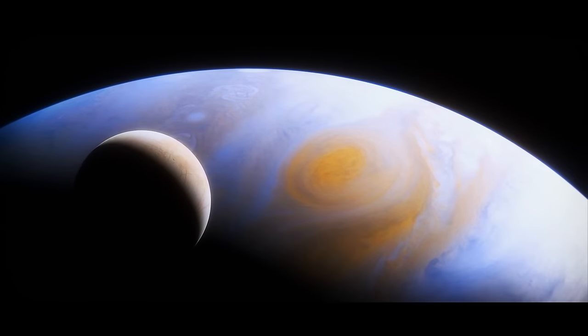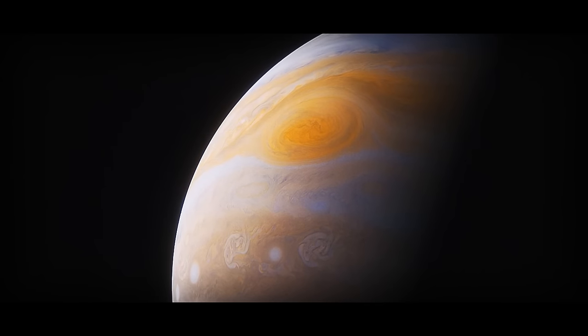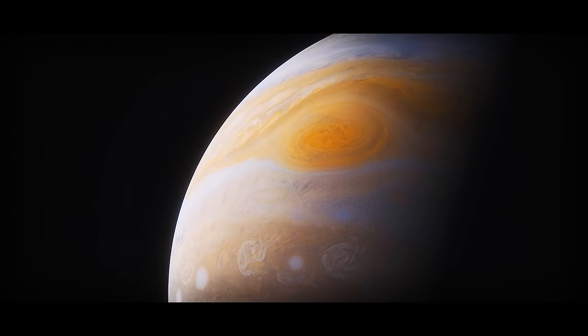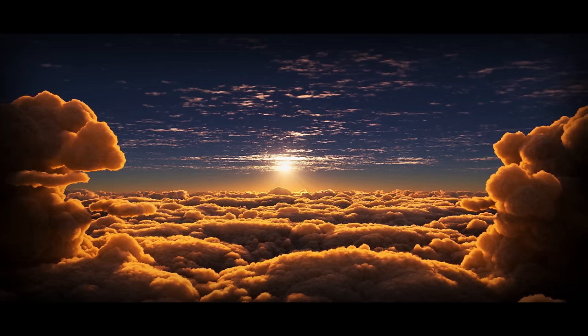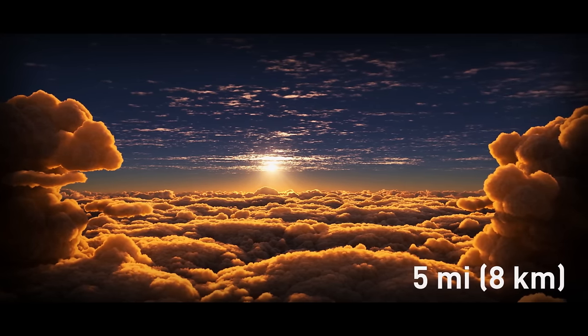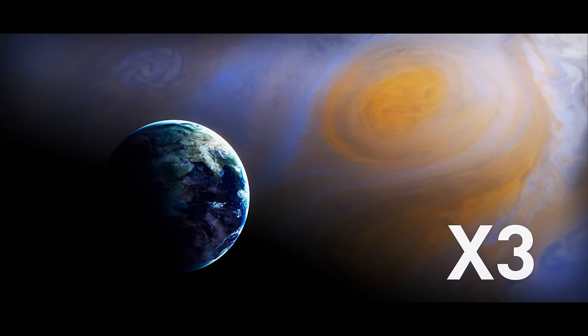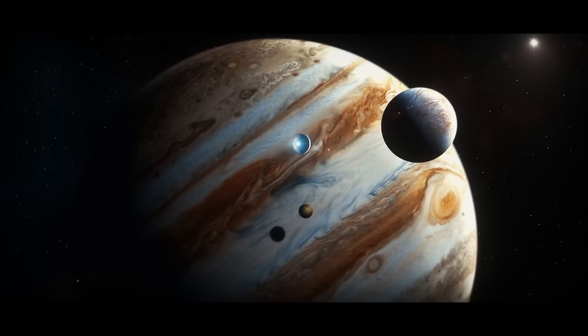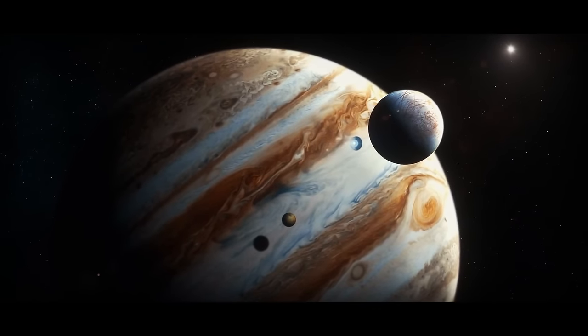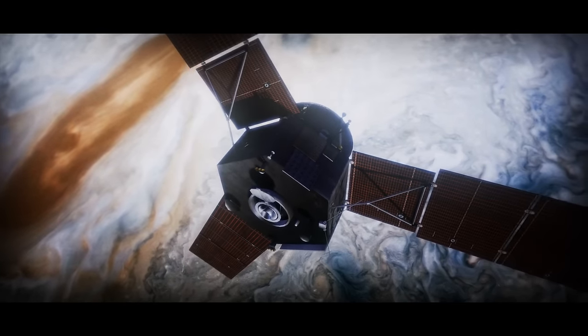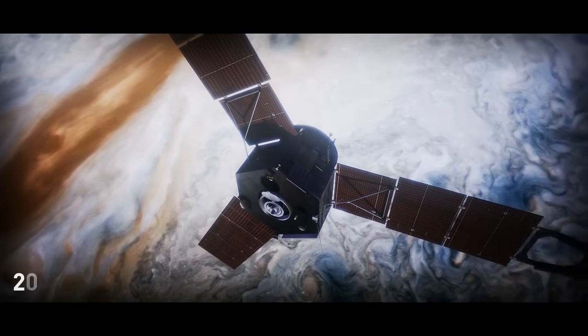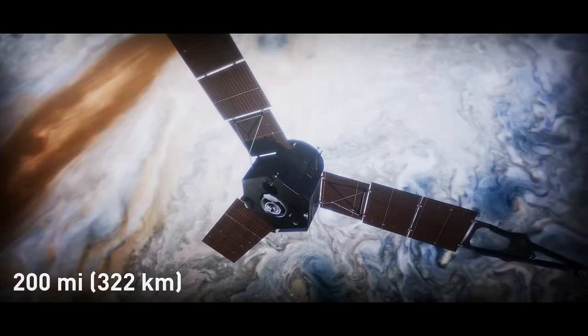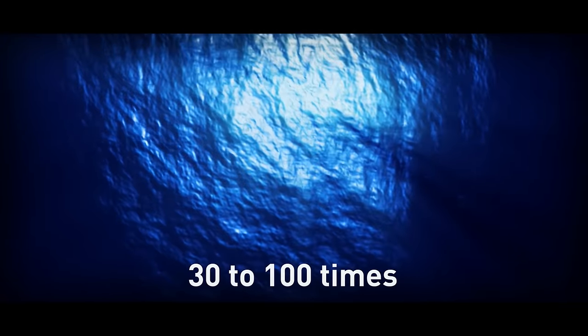The Great Red Spot is an enormous storm raging in the southern hemisphere of the gas giant. Its top parts are towering more than 5 miles above the surrounding cloud tops. The storm's almost 3 times as wide as our planet. In 2017, NASA's Juno space probe managed to collect lots of data about the red spot. And it turned out that the monster of a storm went more than 200 miles down into the planet's atmosphere. That's 30 to 100 times deeper than any ocean on Earth.